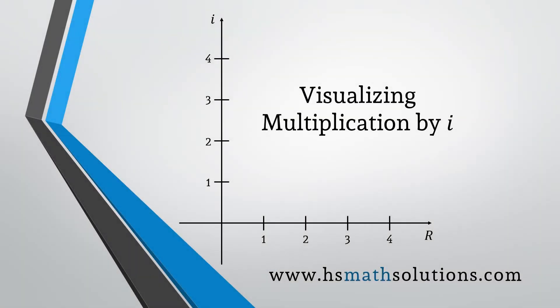In this example, I want to show you a visualization in the complex plane for multiplying a complex number by the imaginary number i. We'll look at two different examples and we'll see in both cases that multiplying by i just rotates a complex number counterclockwise 90 degrees in the complex plane.